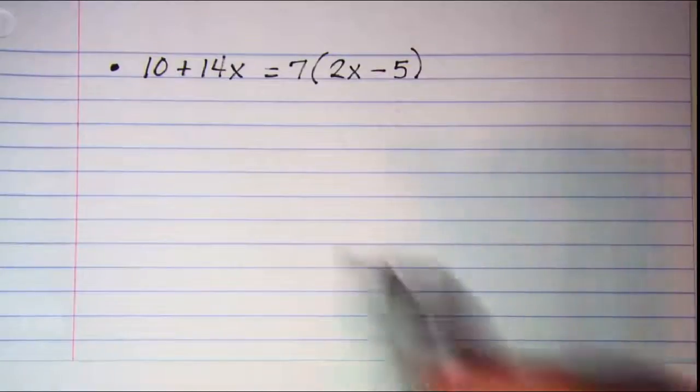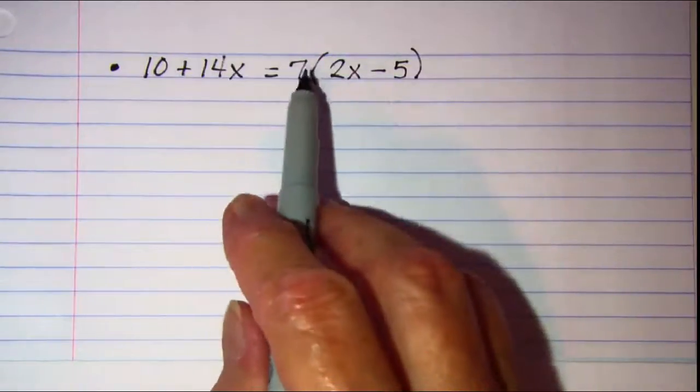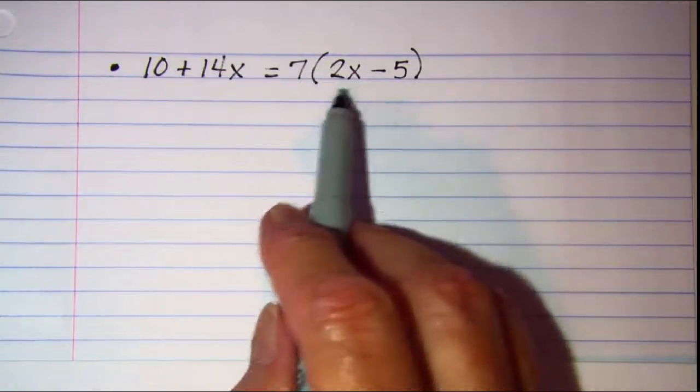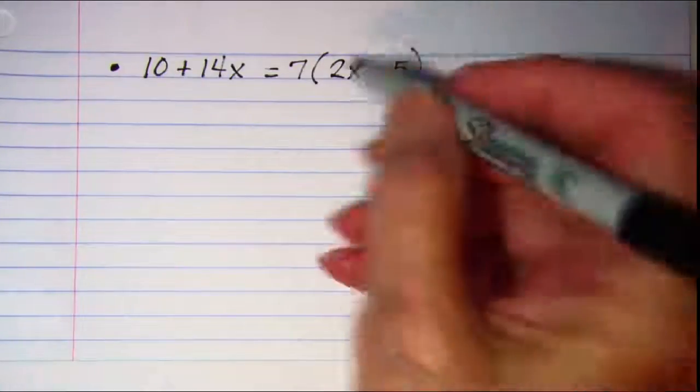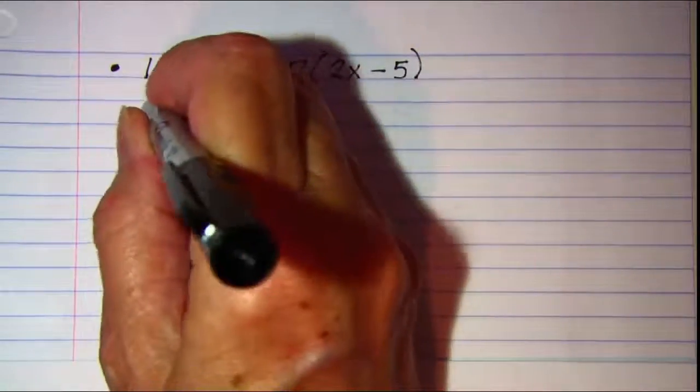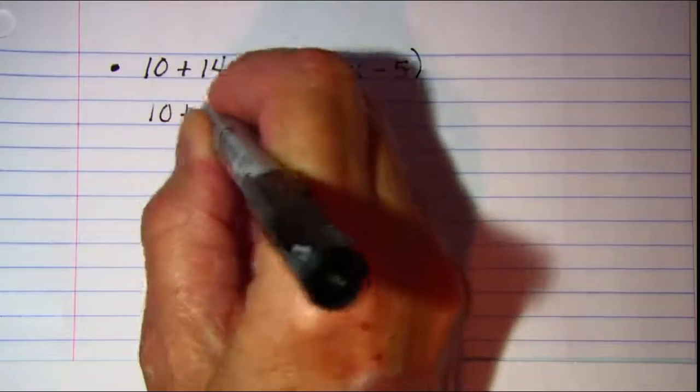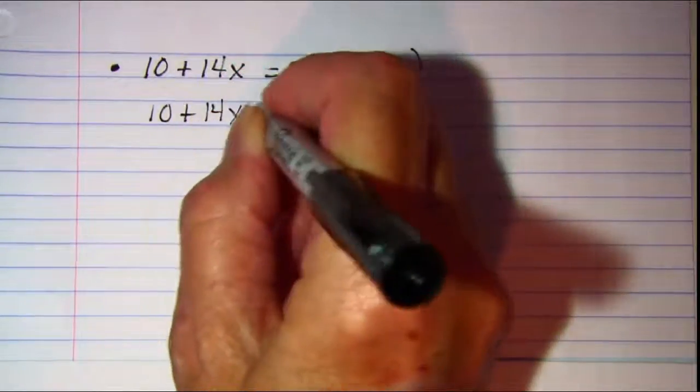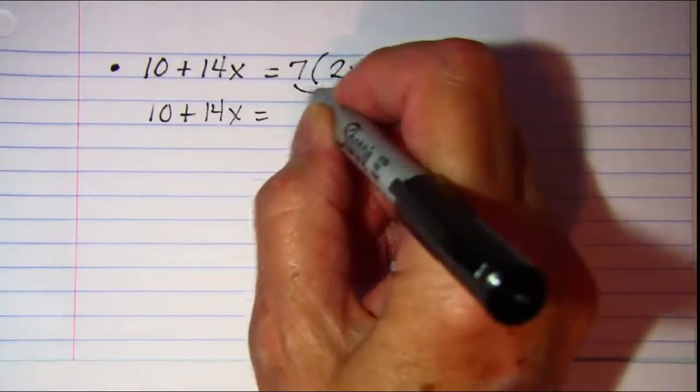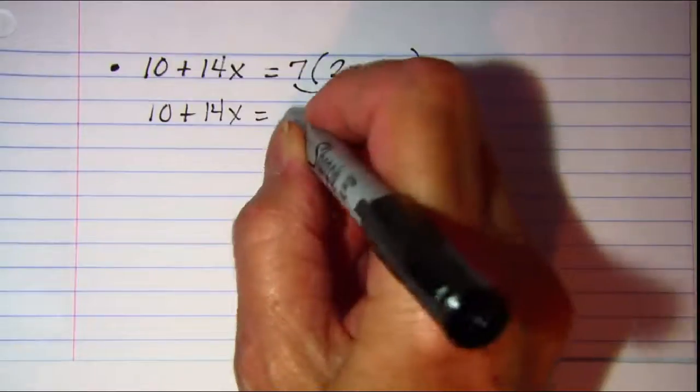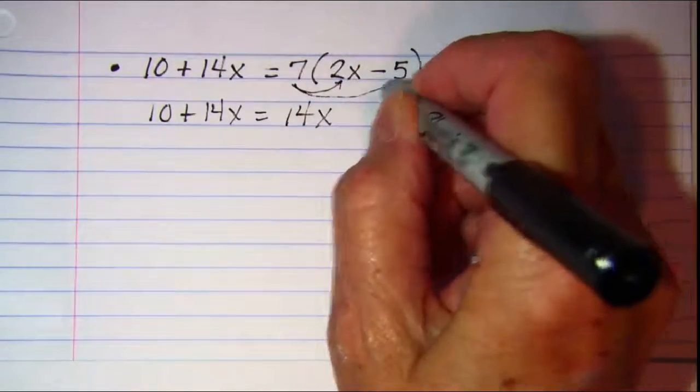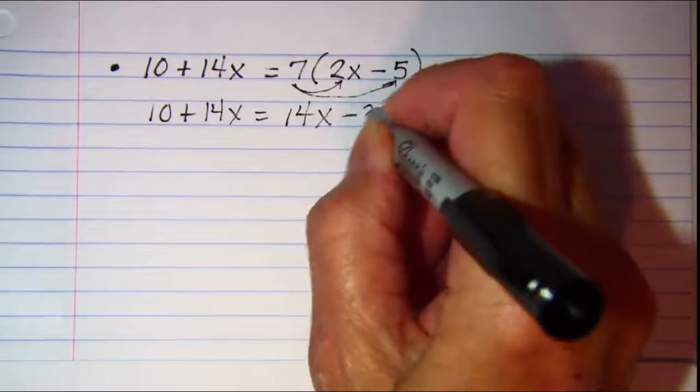Let's do another one. On this one we see parentheses, so we'll need to get rid of those first by distributing. Let me copy this left side, 10 plus 14x equals, and then 7 times 2x is 14x, and 7 times negative 5 is negative 35.